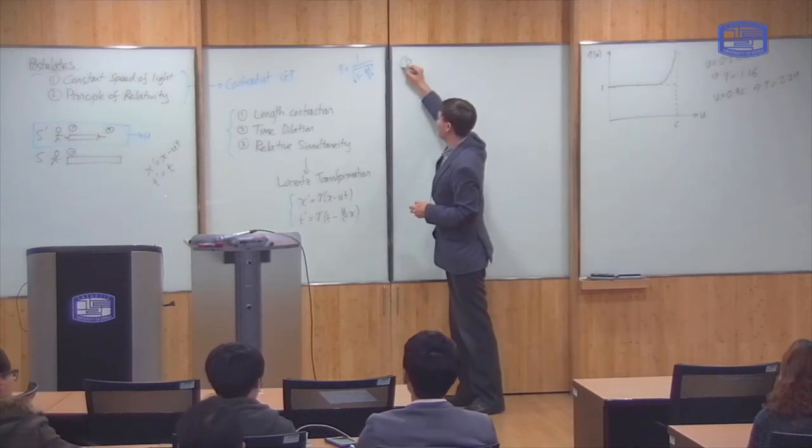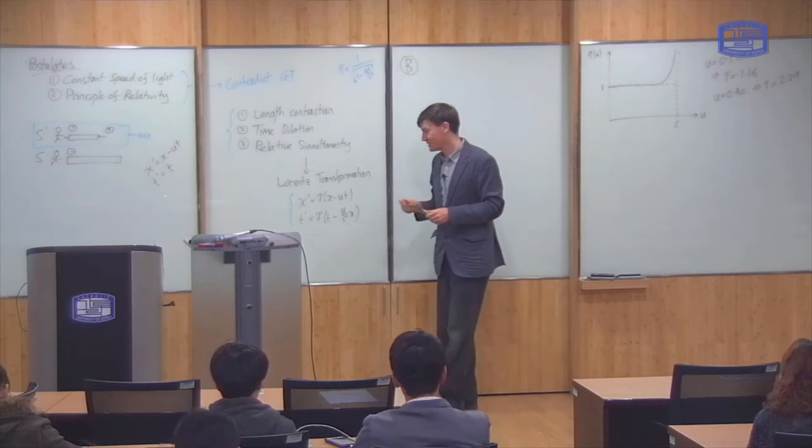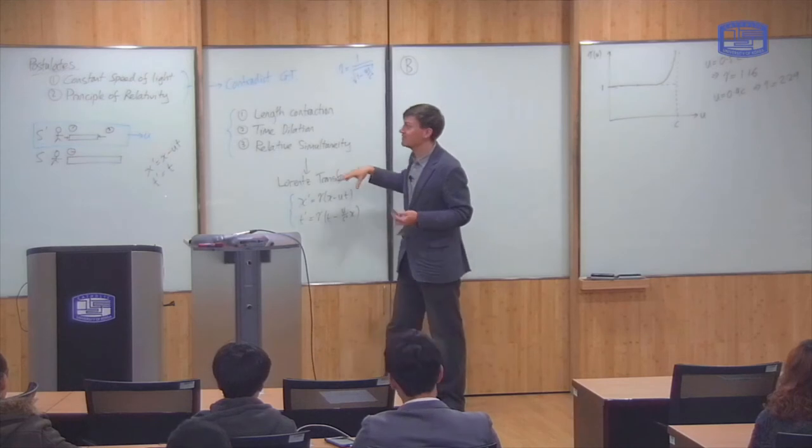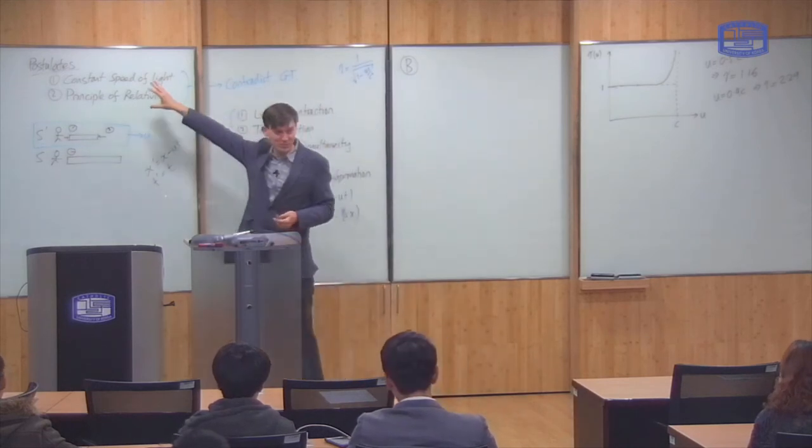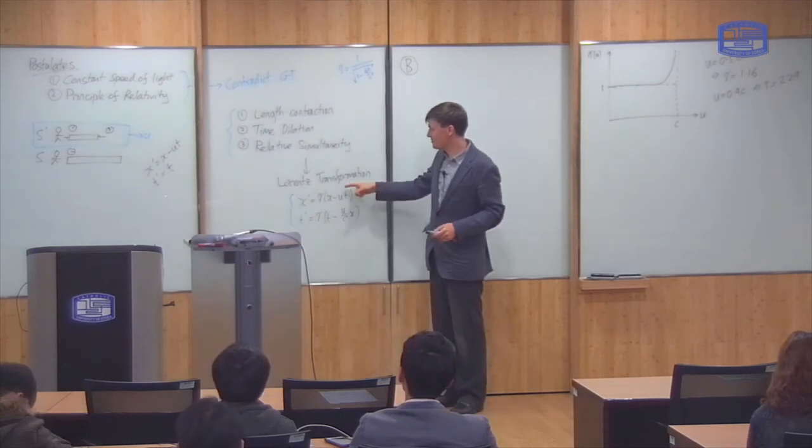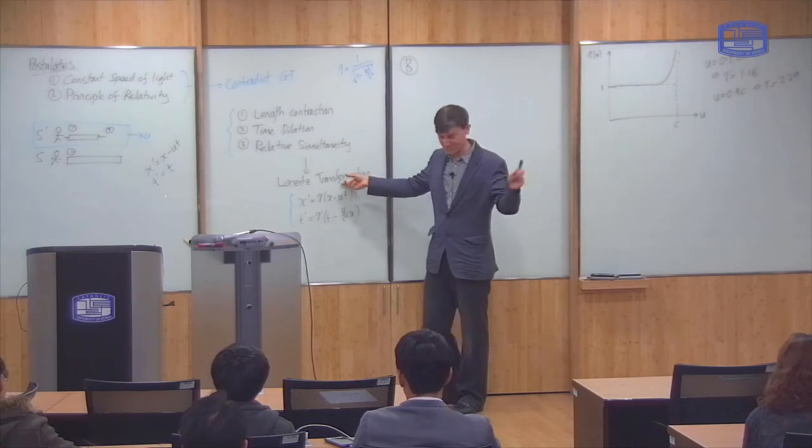So the second point I wanted to make, you might have already wondered about this. This is called the Lorentz transformation, right? But I said that these postulates here were first thought of by Einstein, which is true. So it seems a bit weird that this is named after Lorentz and not Einstein, right? Lorentz was a different physicist.